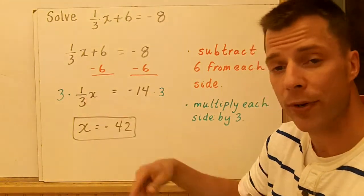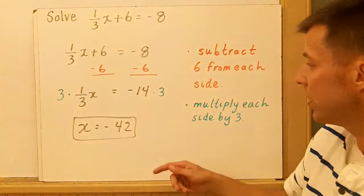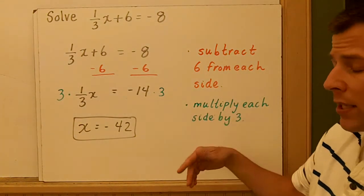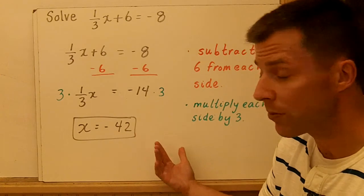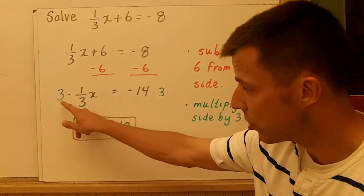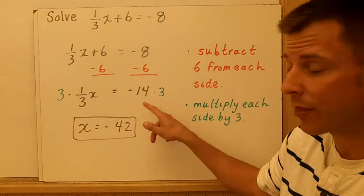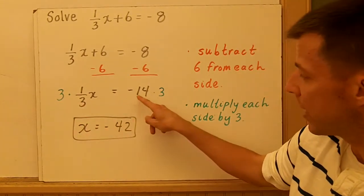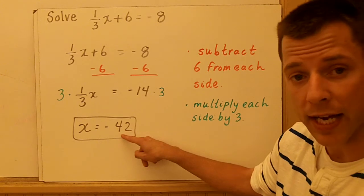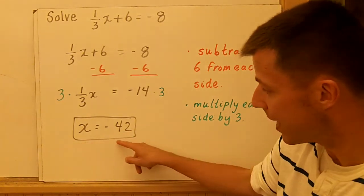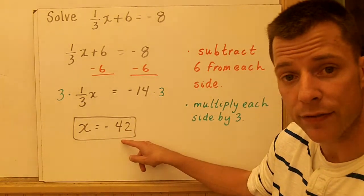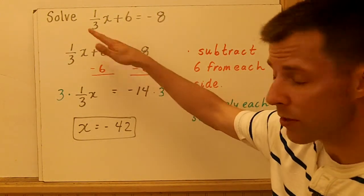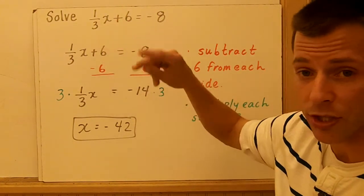and I'm left with 1/3 x equals negative 14. So now I have this operation of multiplication. To undo multiplication, you can divide by 1/3. Dividing by 1/3 is the same as multiplying by 3. So I multiply each side by 3, which will eliminate the denominator and leave me with just x. Negative 14 times 3 is negative 42. So my solution is x equals negative 42. That's our first basic two-step equation.